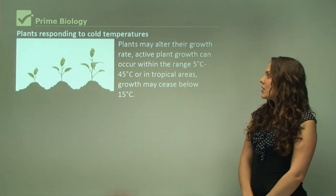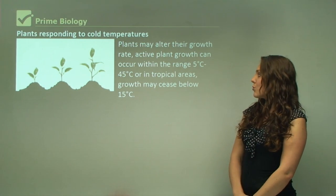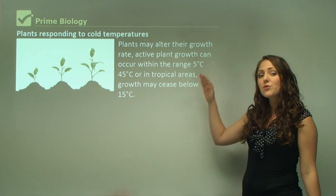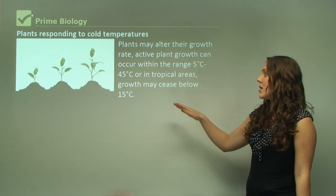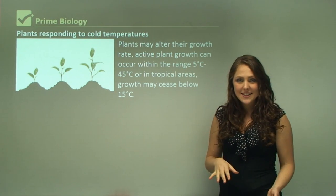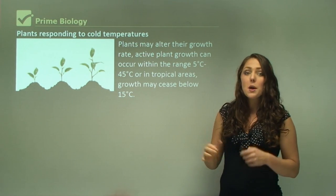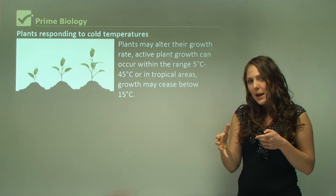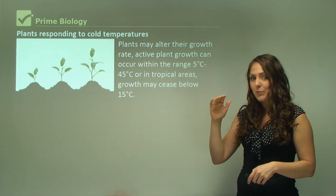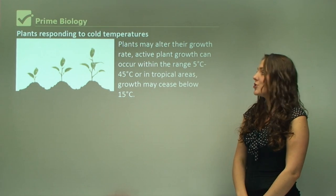Plants may alter their growth rate. Active plant growth can occur within the range of 5 degrees to 45 degrees Celsius. In tropical areas, plant growth may cease at 15 degrees Celsius — they might be able to survive, but they are not growing within a temperature range below 15 degrees.